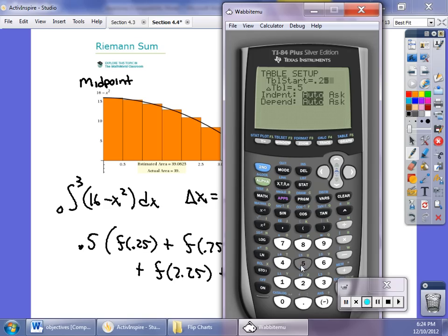One of the things you can do on your calculator is you can change your table. So let's start at 0.25, and we go up by 0.5. So when I go to here on my table, that's my first height, second height, third height, fourth height, fifth height, sixth height. That's all the heights I need. I just add them all up, multiply it by 0.5. And that's how they got their answer right here. Again, getting closer and closer to 39.